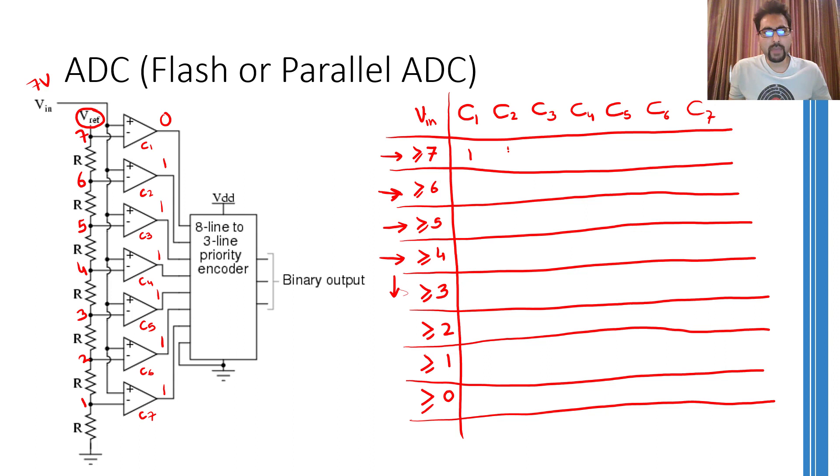So if the input voltage is greater than 7, all these comparators are going to give you a positive saturation output, that is 1. And if the value of the input voltage is greater than 6 but lesser than 7, then the first comparator, that is C1, is going to give you a negative saturation value or a 0, and all other comparators are going to give you a 1.